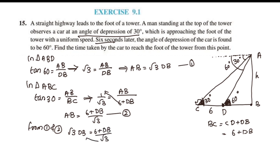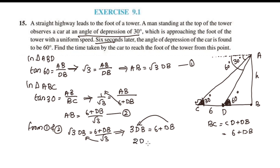Multiplying both sides by root 3: root 3 into root 3 is 3. So 3 DB is equal to 6 plus DB. Then 3 DB minus DB equals 6, that is 2 DB equals 6.